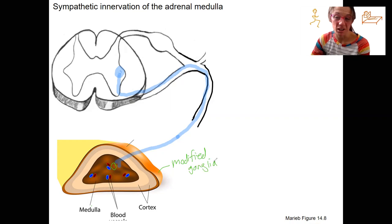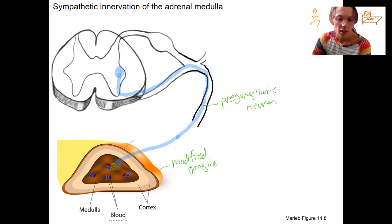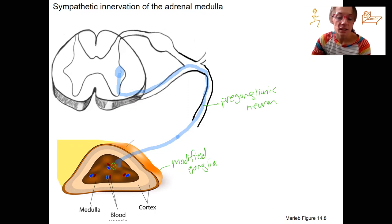So this is basically our synapse right here. All pre-ganglionic neurons have to synapse. So this is our cell inside the adrenal medulla. Is it going to have an axon drawn for it? No — it's not nervous tissue. It is a gland.